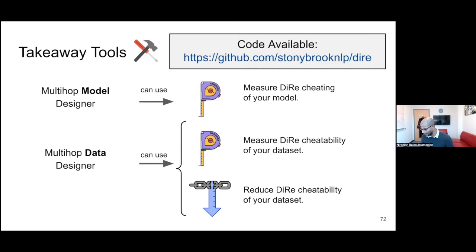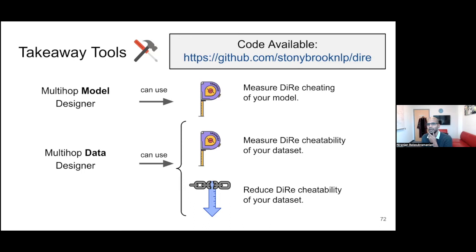To conclude this part of the talk: if you simply take the notion that when all supporting facts are not present in a context, a model should not get the correct answer, you can formalize it, use it to measure how much disconnected reasoning a model can do, and design incentives that force models to not rely on disconnected reasoning as much — getting reduced cheatability. If you're a designer of a multi-hop model, you can use the probe dataset to see how susceptible your model is. If you're a dataset designer, you can use probing instances to test cheatability, and reduce the possible disconnected reasoning by doing the transformation we mentioned.